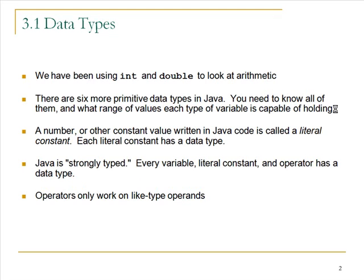In the previous segment, we looked at two data types, int and double, and these are the most common data types for numeric variables in Java. If you're not using int and double to store your numbers, you're expected to have some reason why not. So there are six more primitive data types, eight all together, and you need to know all of them and what range of values they can hold. You also need to know that when you write numbers in your program — like the number 10 — this is called a literal or a literal constant, and the literal constants also have data types. This introduces the concept that Java is a strongly typed language. Every variable has a data type, the literal constants have a data type, and the operators have data types. It's obvious that the variables have data types because you have to use the name of a data type to declare one, but it's not so obvious that the literal constants and the operators also have data types. And this is a key point.